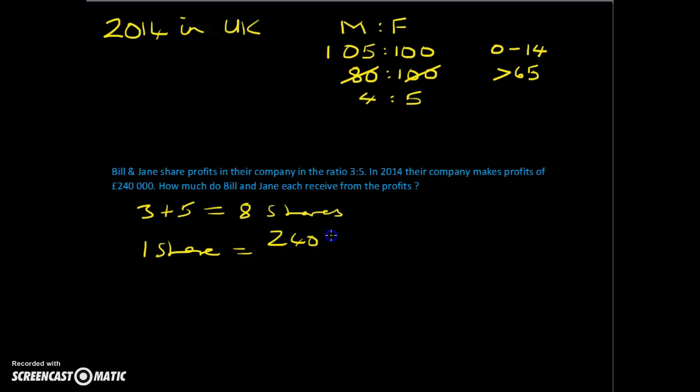So the profits are £240,000. If we want one share, divide it by eight. Eight into 24 is three times, and then we've got the zeros left over. So one share is £30,000.